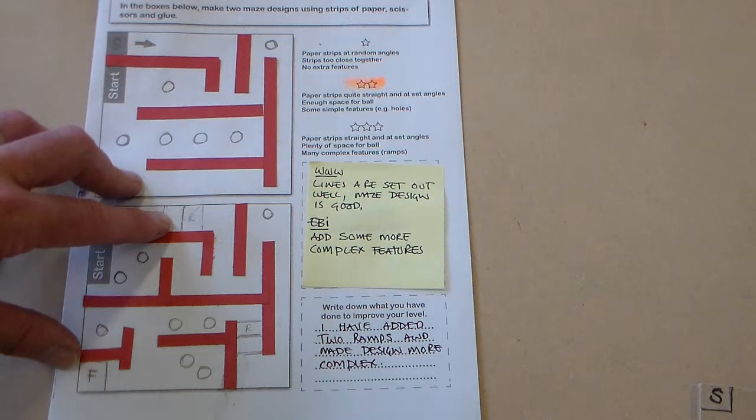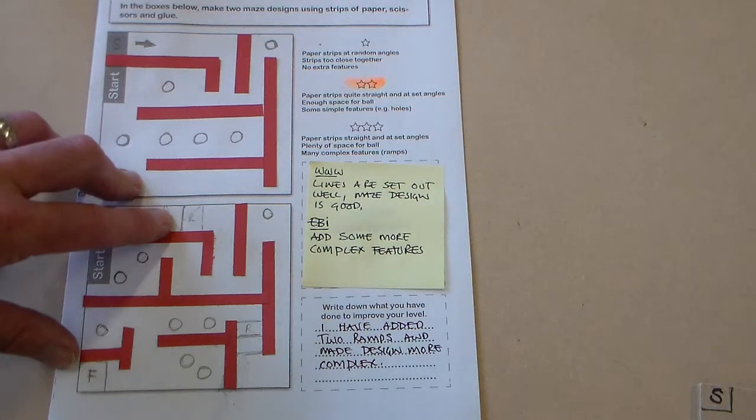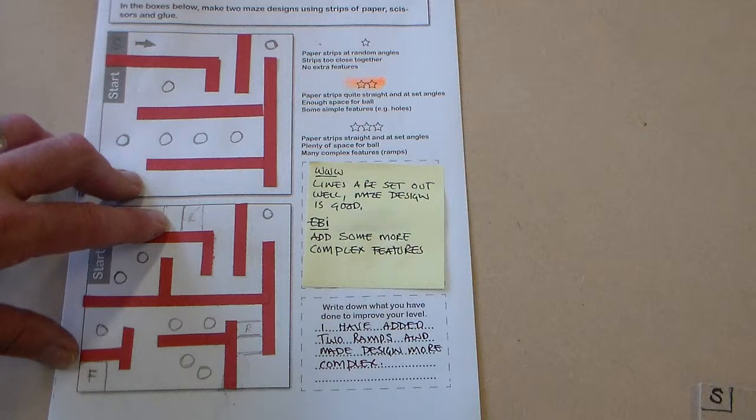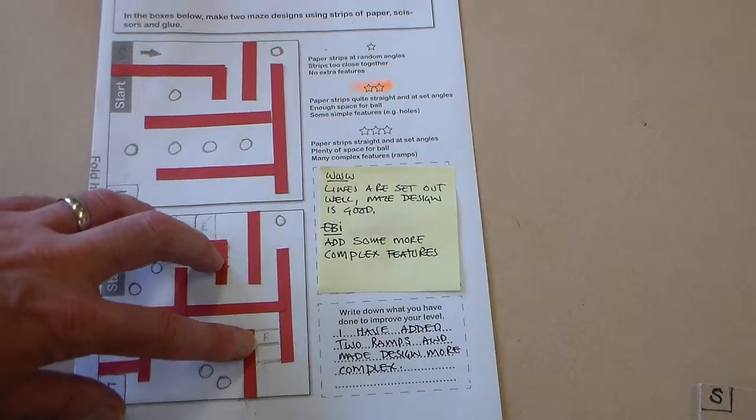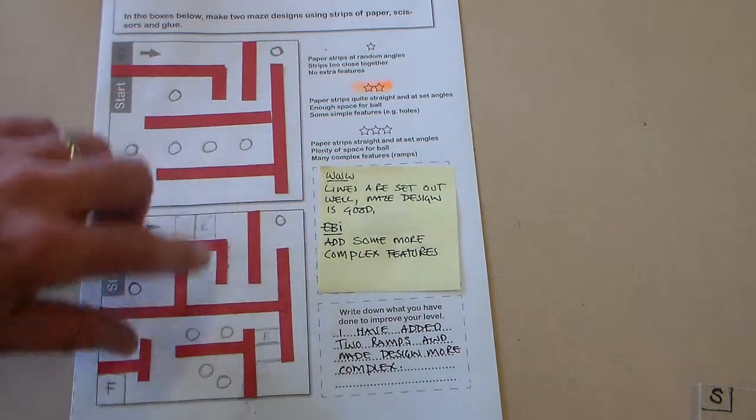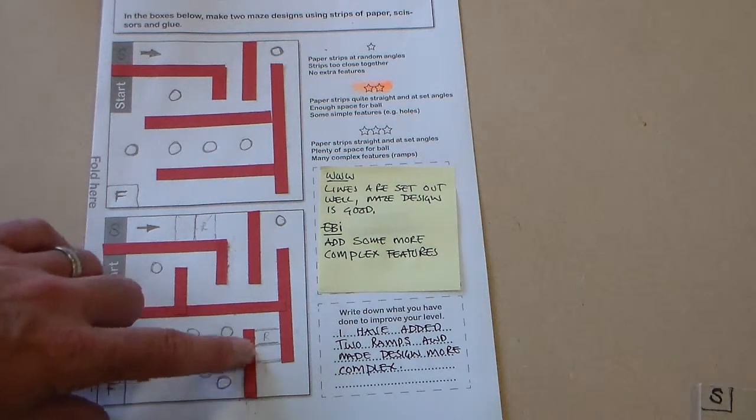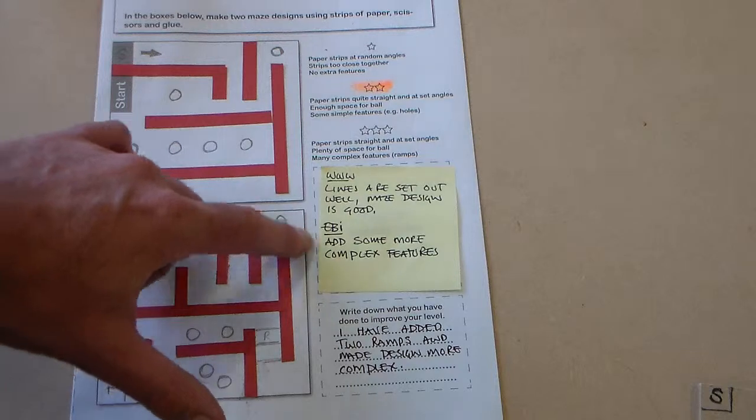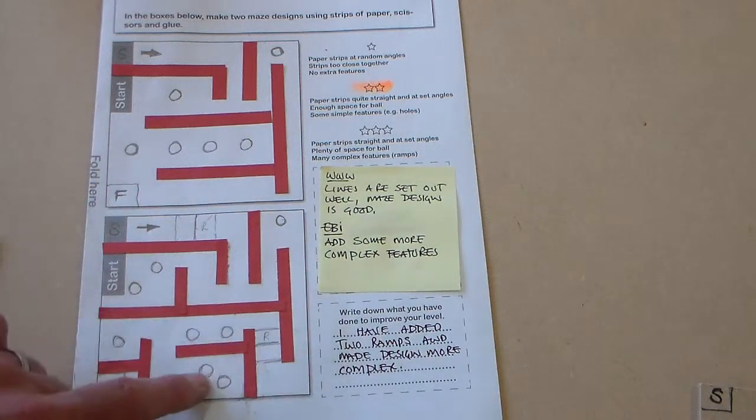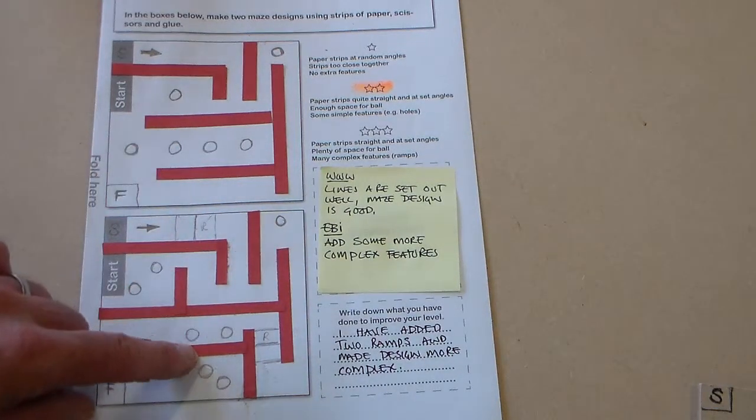Well here's the second design. It has complex features so it has a ramp drawn here, there's a rectangle with an R in it, one here and one here. You can see the second design is more complex. It has a more complex route for the ball to follow and it has added drop holes.